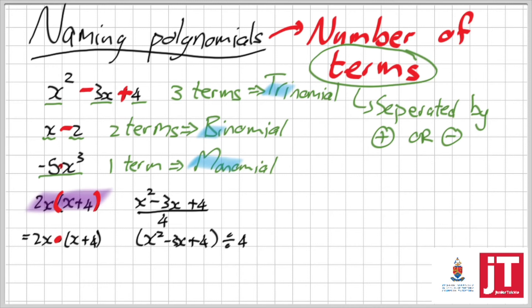Remember, you've got a bracket and that bracket is times by 2x. The same thing with the second one. Your x squared minus 3x plus 4 is in a bracket and that's divided by 4. So in other words, I've got a bracket and divided by a number. Therefore, both of them are monomials because there isn't a plus or a minus that separates the different parts of your expression. There's a times and a divide. So it's a monomial.